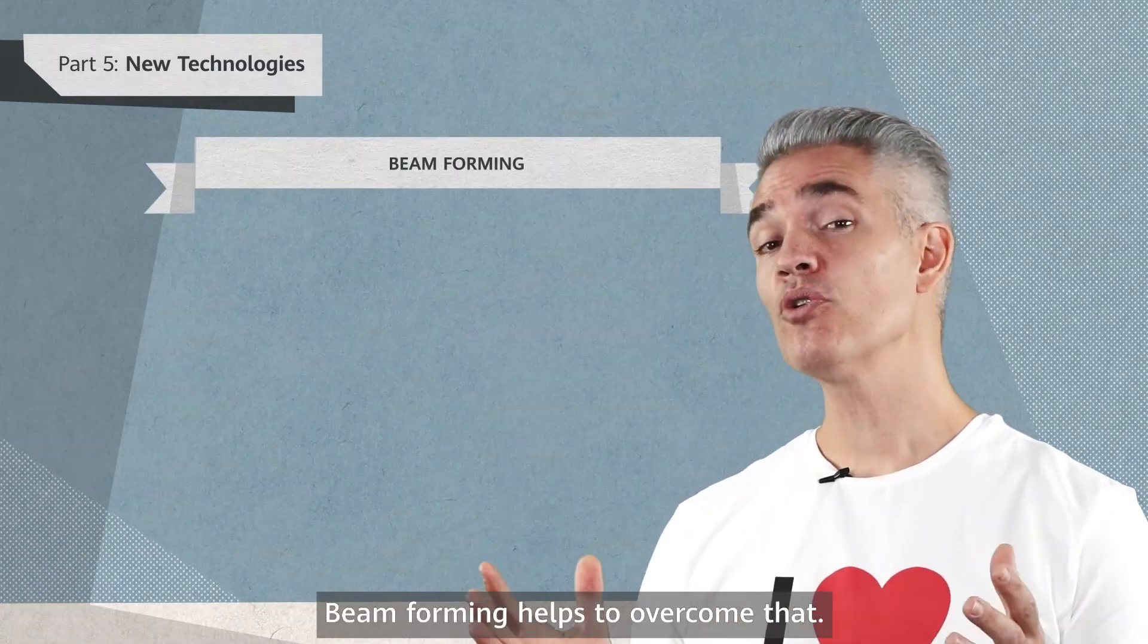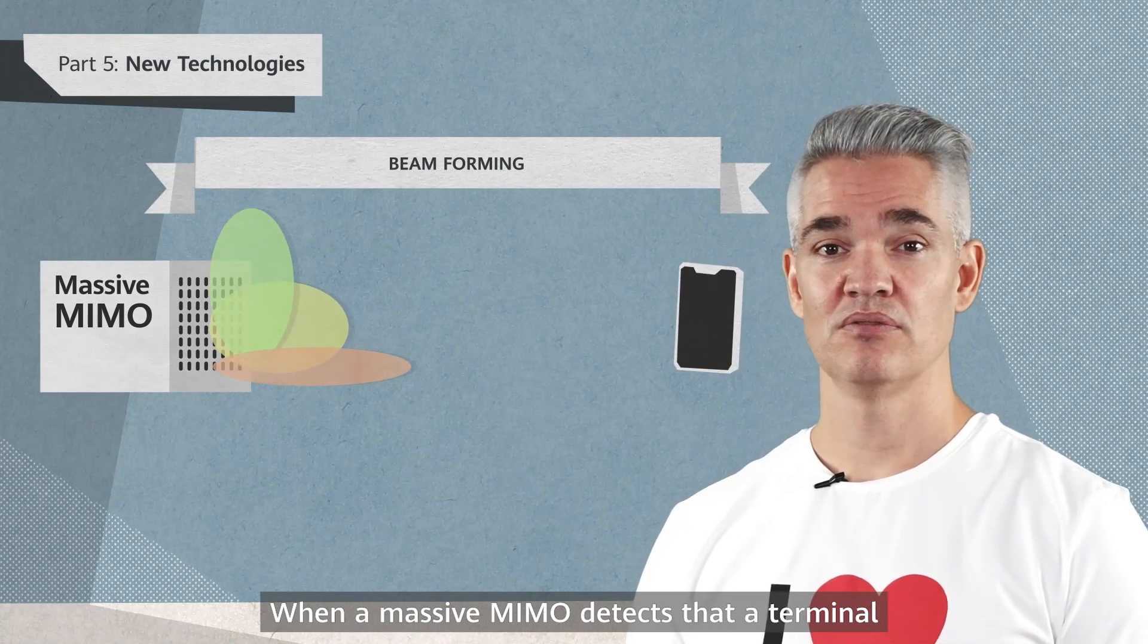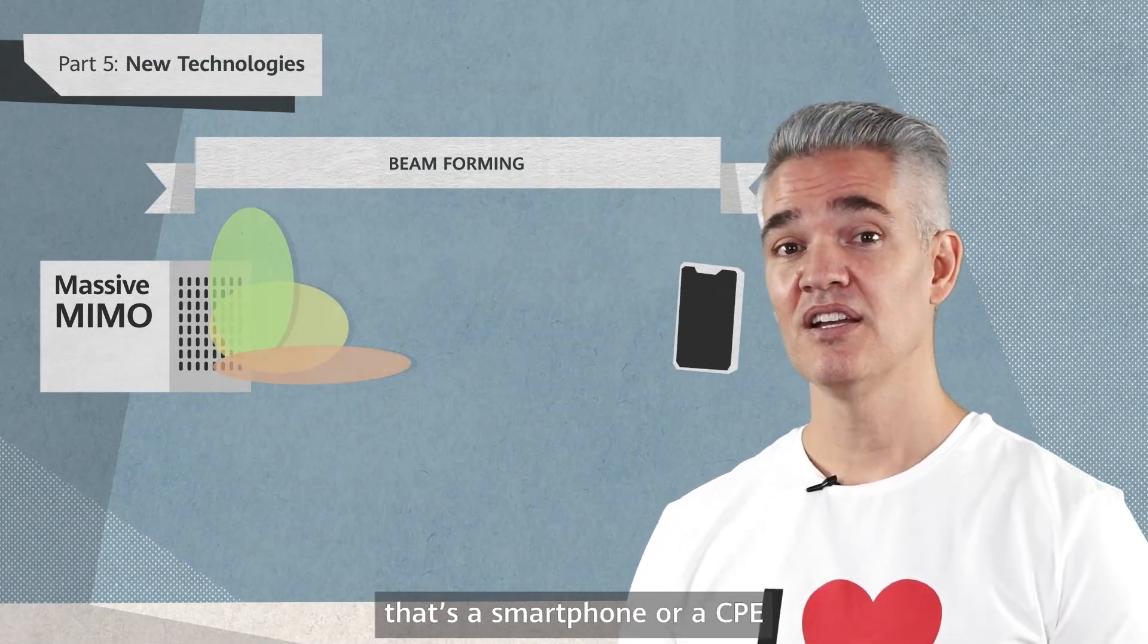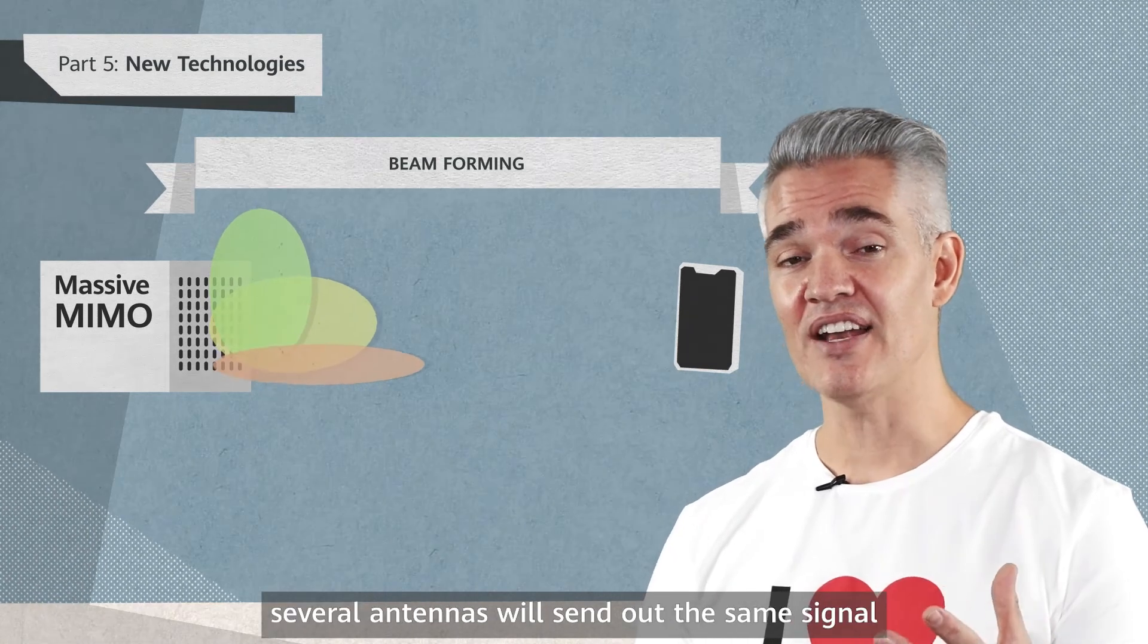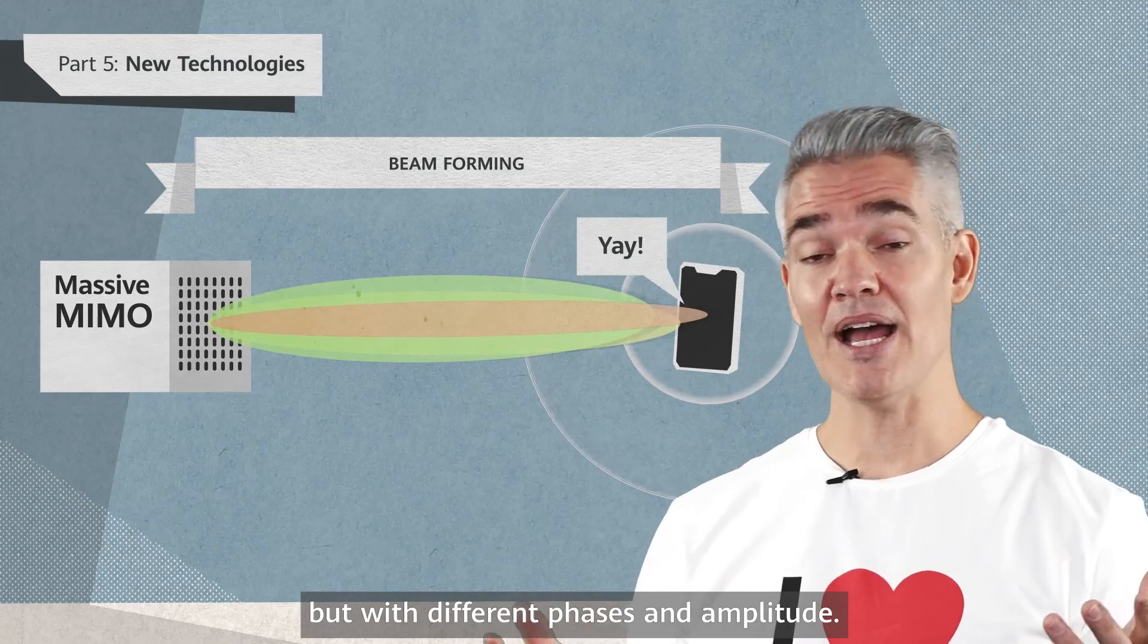Beamforming helps to overcome that. When a massive MIMO detects that a terminal, that's a smartphone or a CPE, is located relatively far, several antennas will send out the same signal, but with different phases and amplitude.